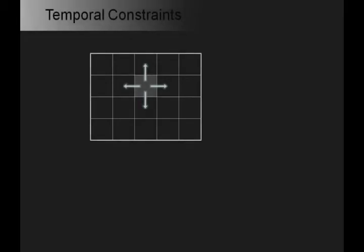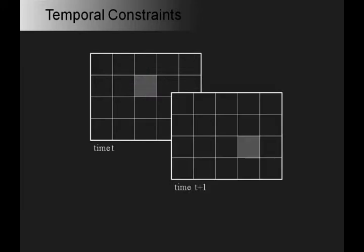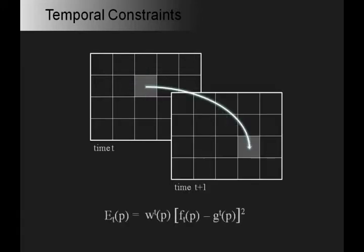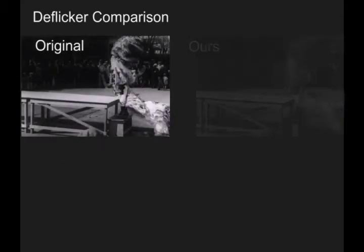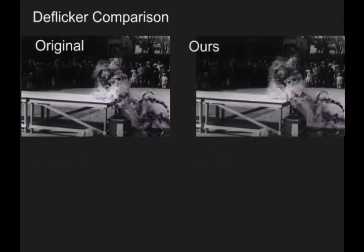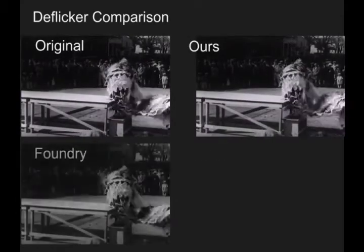Our filters may also be applied to videos. For images, we define a set of constraints on neighboring pixels. For videos, we can add temporal constraints between corresponding pixels. Here is a result that uses temporal constraints for video deflickering.